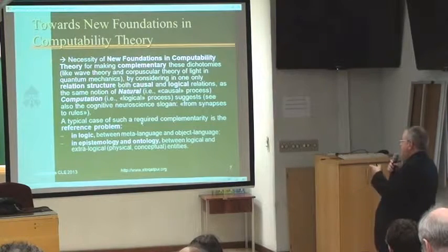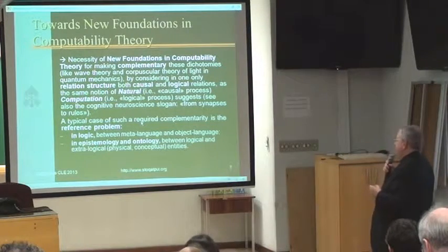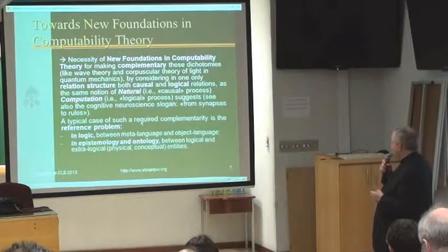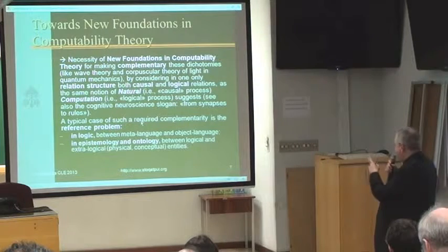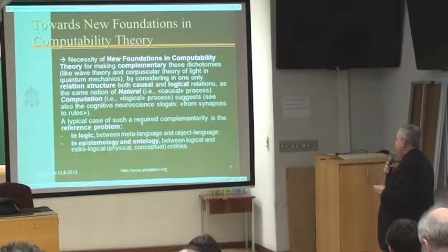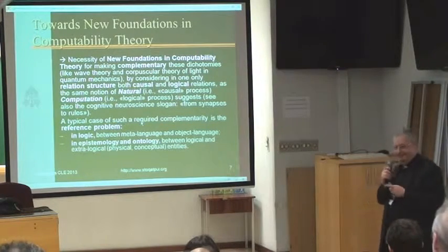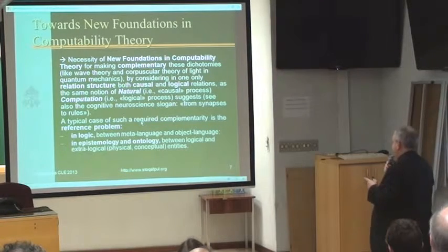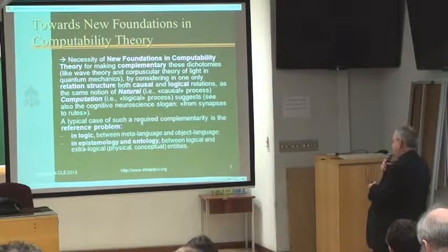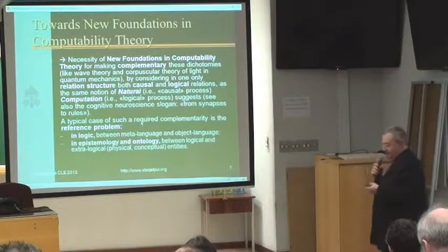There is a necessity of new foundations in computability theory for making complementary these dichotomies — like the wave theory and corpuscular theory of light in quantum mechanics — by considering in one only relational structure both causal and logical relations as the same notion: natural, that is causal process; computation, that is logical process. A difficult case of such required complementarity is the reference problem in logic between meta-language and object-language, in epistemology and ontology, between logical and ontological physical and conceptual entities.